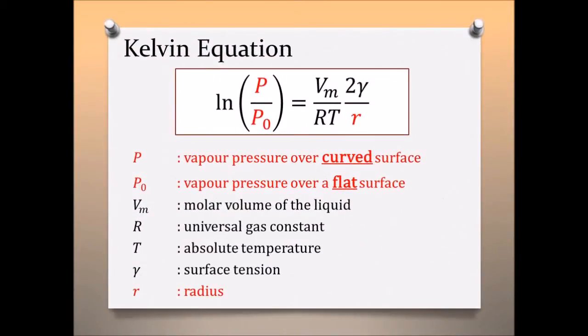Importantly, the Kelvin equation relates the ratio of the vapor pressure for a curved surface denoted P and its equivalent flat surface, P₀, to the radius R.